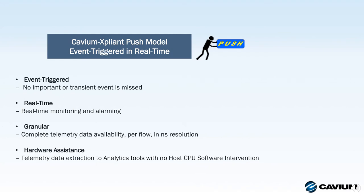Cavium's model is a push model. It utilizes an event-triggering mechanism provided in real time, so no important or transient events can be missed. The goal is to allow very specific and forensic events to be recorded. One of the goals with the push model is to reduce the amount of superfluous information that can overwhelm a poll model. The intent is that, by being event-driven and real time, it enables deeply forensic analysis on a per-flow basis at nanosecond resolution.